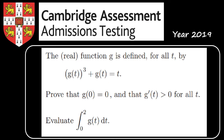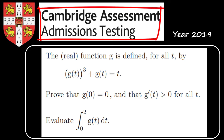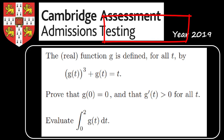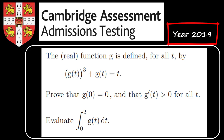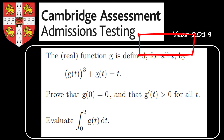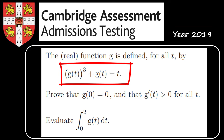Welcome to this video on an interesting problem from the Cambridge Assessment Admissions Testing in 2019. Let's start by defining our function g of t for all t such that g of t cubed plus g of t equals t.